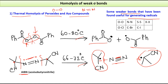Other examples of weak bonds useful for generating radicals include N–N bonds, O–O bonds, halogen–halogen bonds, and carbon–bromine and carbon–iodine bonds. There is also thermal cracking, mainly used for higher alkanes, which requires very high temperatures — around 500°C or greater — because C–C bonds are not weak sigma bonds like those in peroxides or azo compounds.